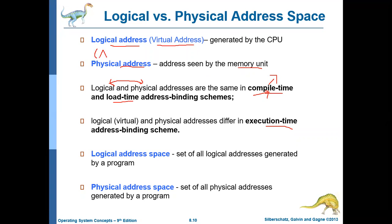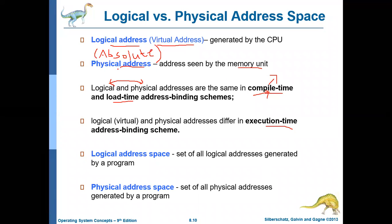Absolute address is otherwise called as physical address. Logical address is otherwise called as virtual address. If the compiler knows the starting address beforehand, then it will directly create the absolute code with physical address. Similarly, even if the compiler does not know, it will create code with a relocatable address, and then the relocatable address will be converted to absolute address during load time.